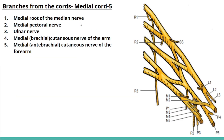The medial cord gives 5 branches, which are easy to remember as many begin with 'medial': the medial root of the median nerve, medial pectoral nerve, ulnar nerve, medial cutaneous nerve of the arm, and medial cutaneous nerve of the forearm.